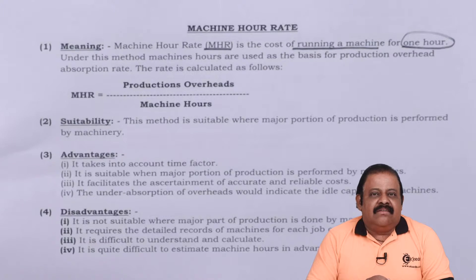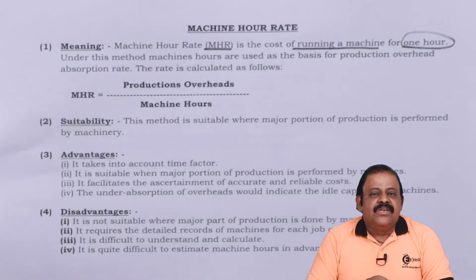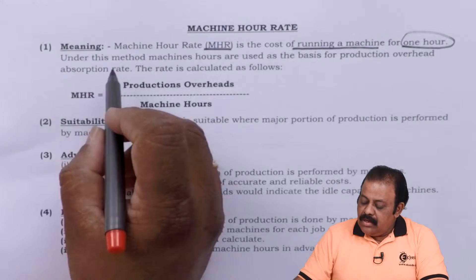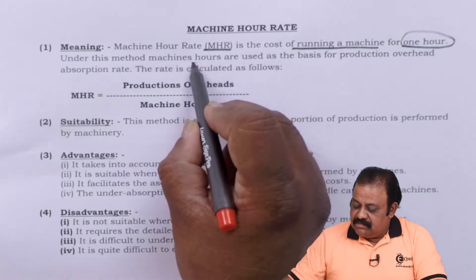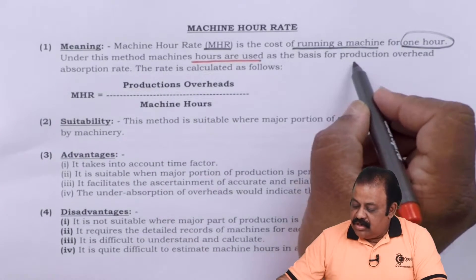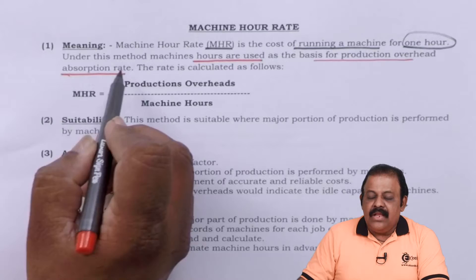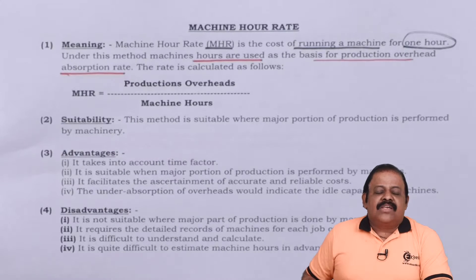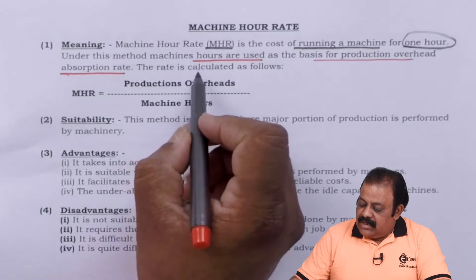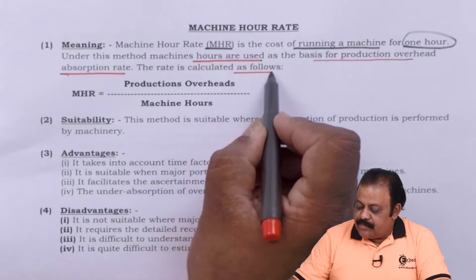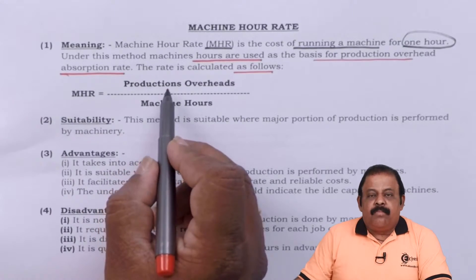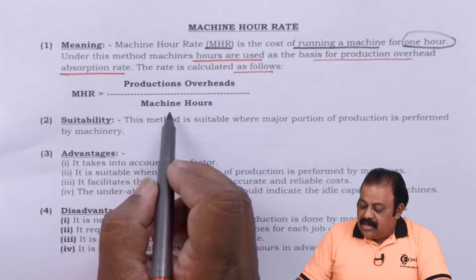A worker is required to handle the machinery — we call him an operator. How much operator salary is there for a period of one year? That all comes into the one-hour cost of that particular machinery. Under this method, machine hours are used as a basis for production overheads absorption rate. Absorption means to include the cost of that particular machinery in our total cost to arrive at the product cost. The rate is calculated as: Machine Hour Rate = Production Overheads ÷ Machine Hours.